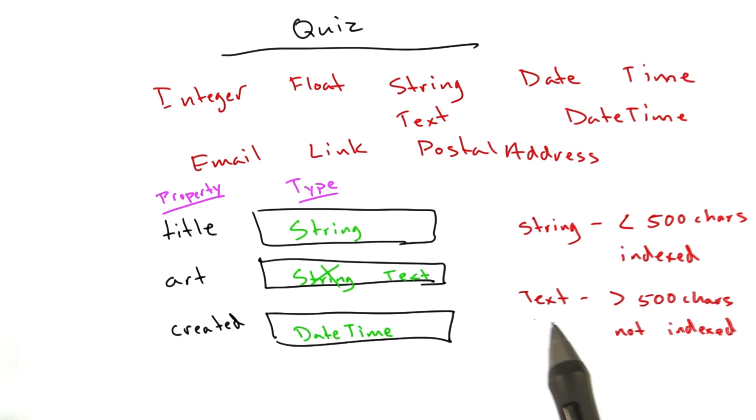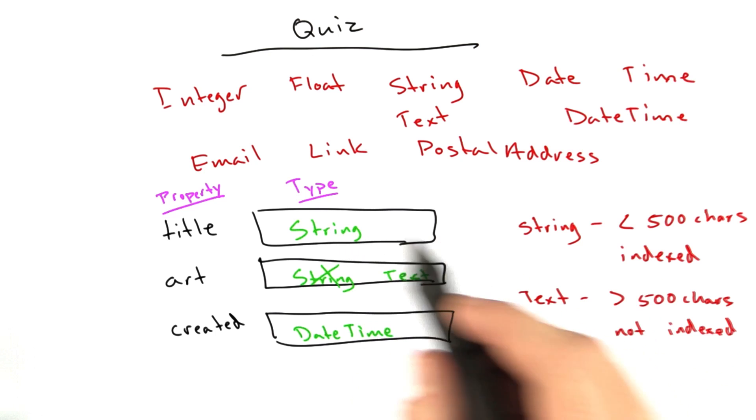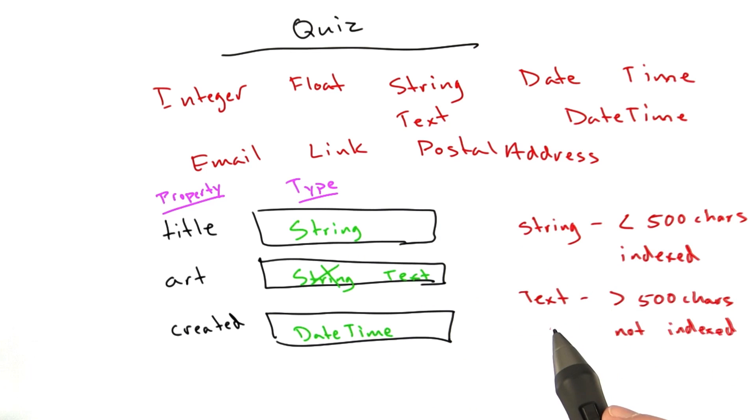We won't be able to sort things by the artwork, which is fine, because what would that even mean? So if we were to use the string data type, which we're going to use on our titles, it's indexed, so you can do queries. You can say get me the art where title equals x. We can't do a query get me the art where text equals x because it's not indexed.